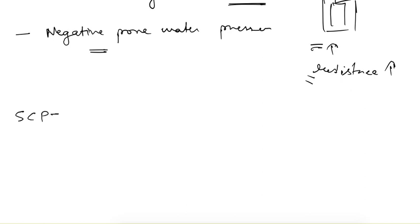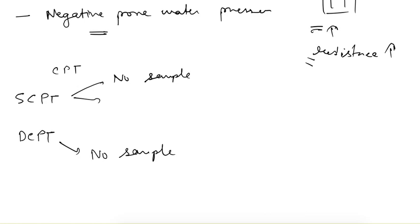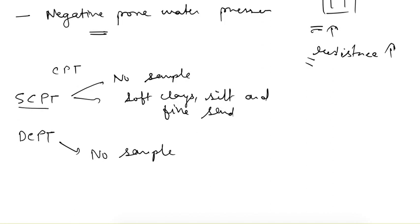Two more tests are the Static Cone Penetration Test (CPT) and the Dynamic Cone Penetration Test. In the static CPT, no sample is obtained, unlike in the SPT. The test is conducted for soft clays, silts, and fine sand. Both tests use a conical sampler instead of a split spoon sampler.